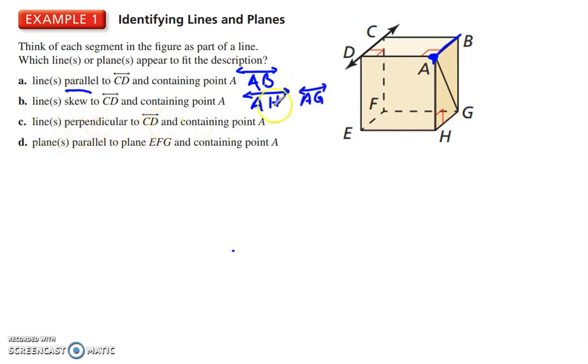Lines perpendicular to CD and containing point A. Perpendicular means at a right angle. There are several lines, like this one, but that one doesn't contain point A. So it's just AD. AD, line AD.